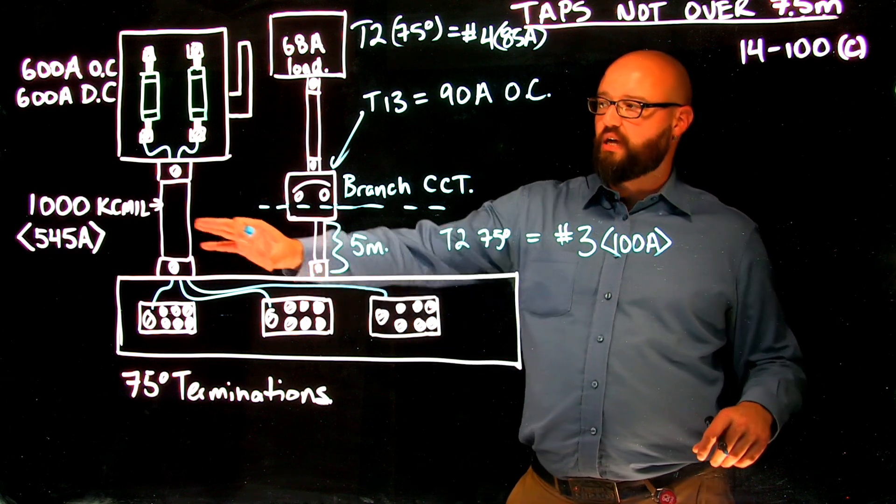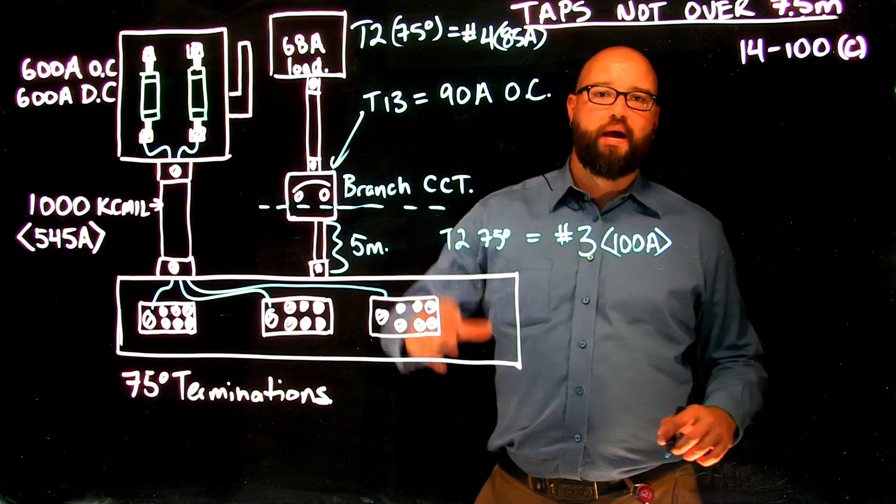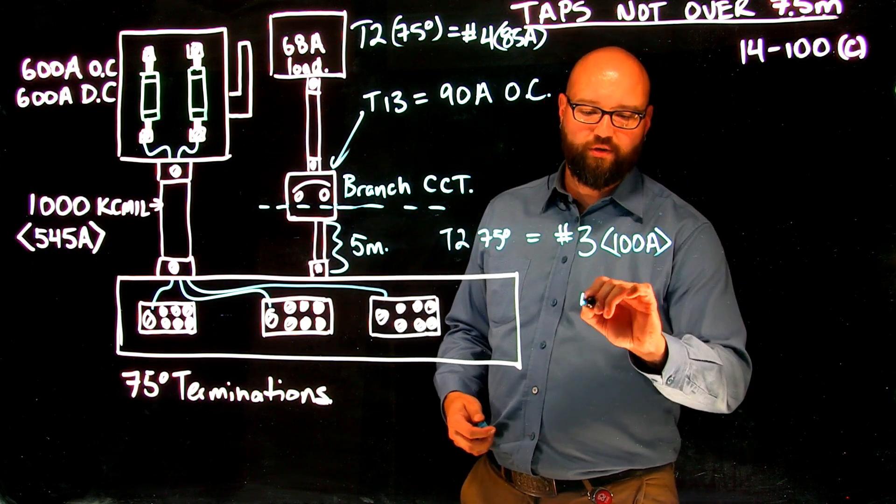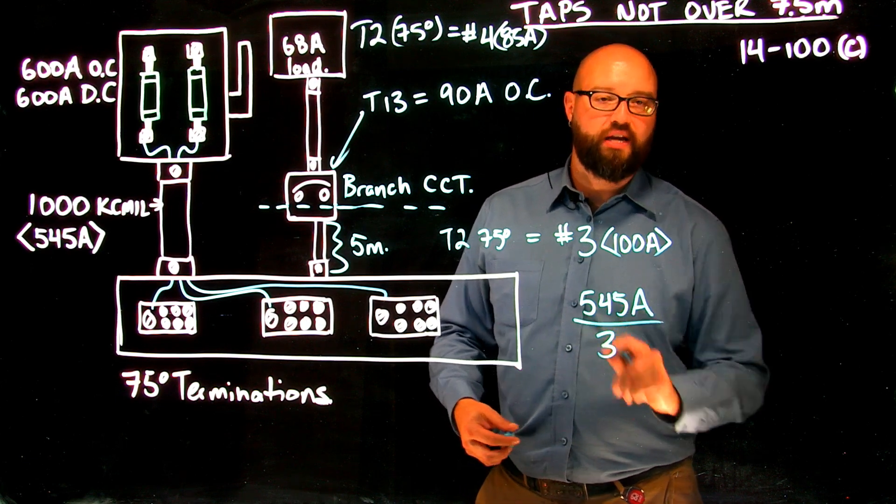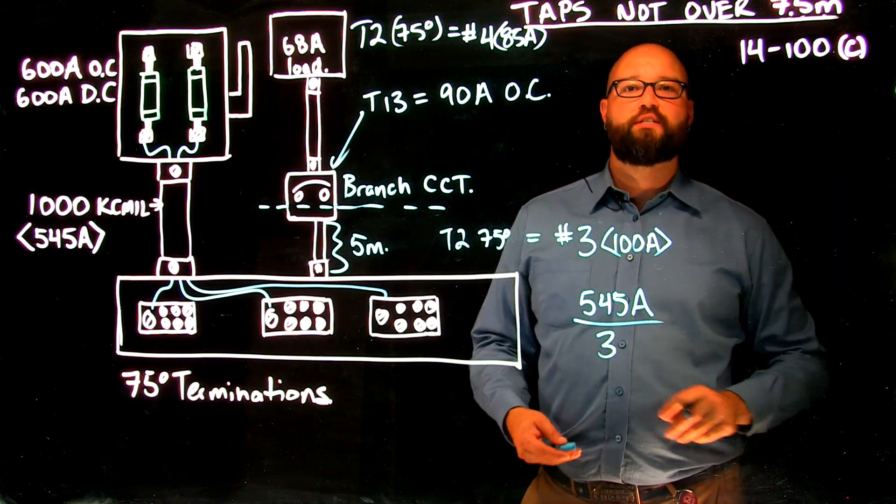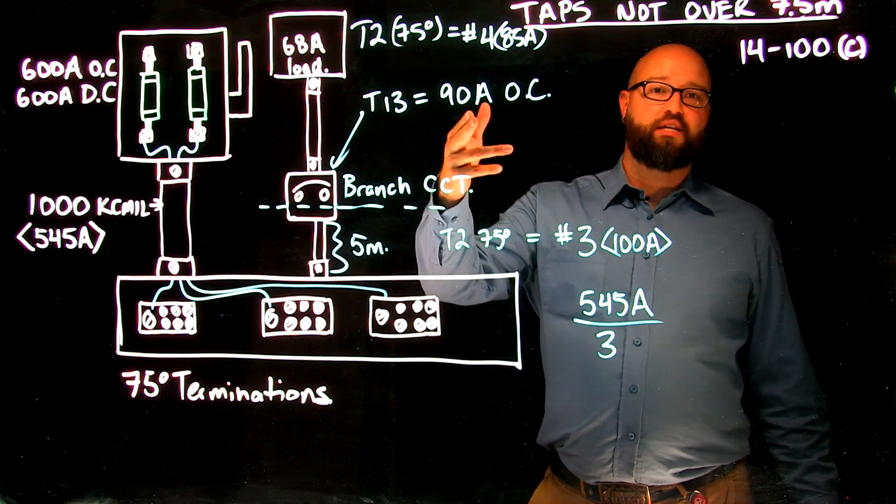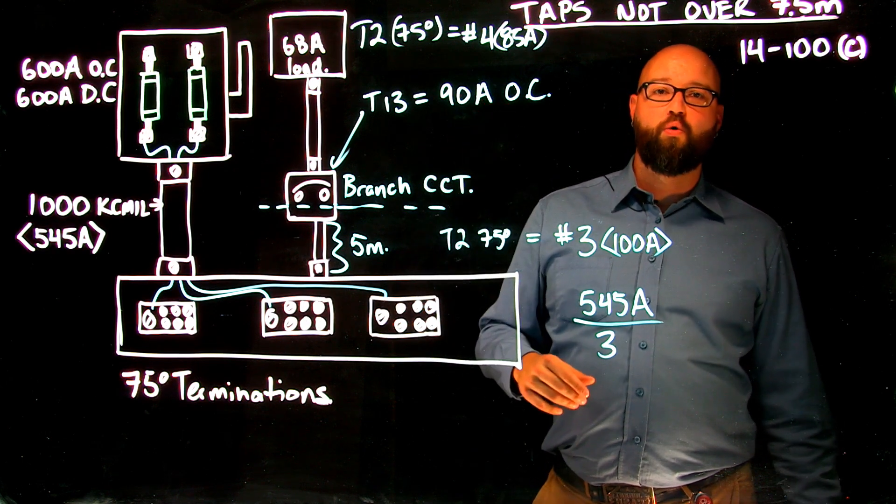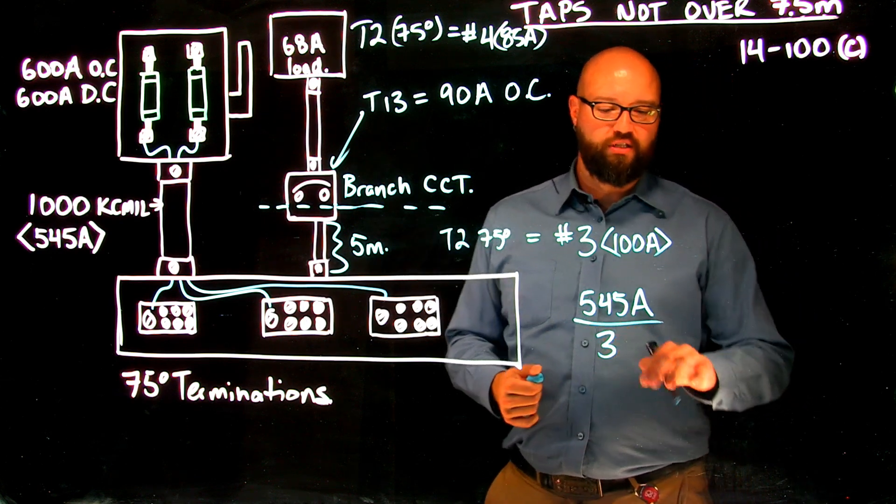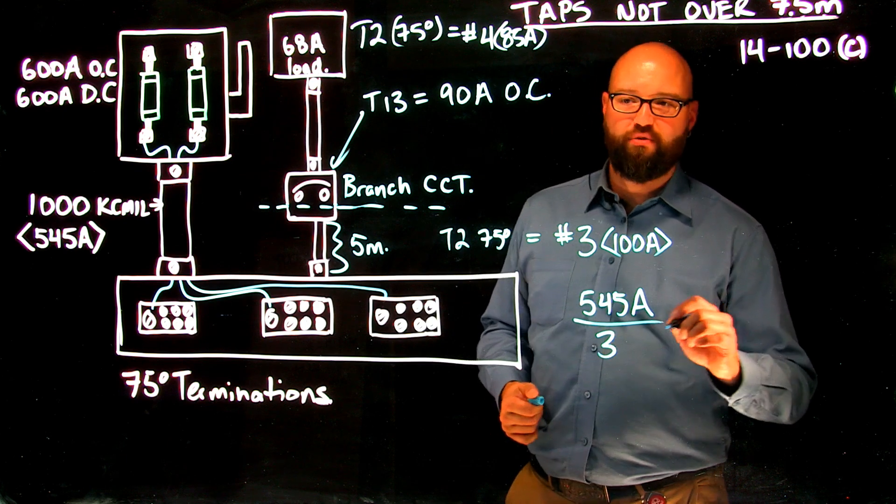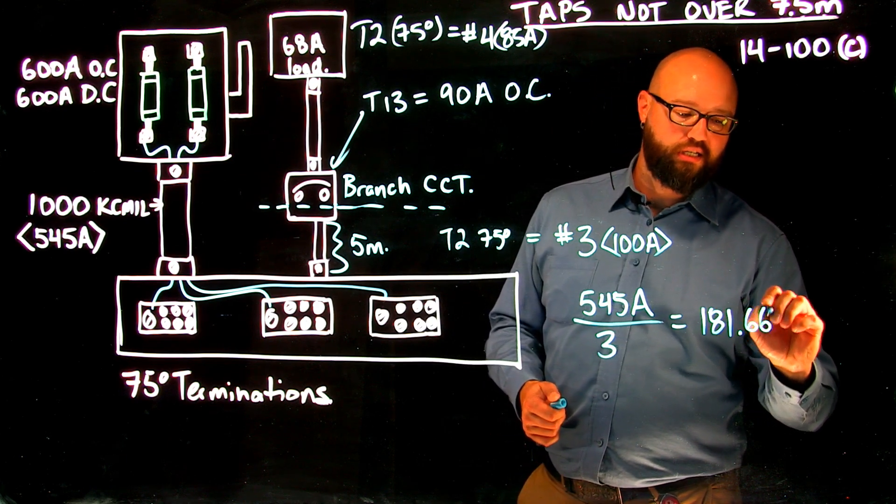The second is I'm going to go over to my feeder conductor, which is a thousand KC mil. I'm going to take the ampacity of that feeder conductor, which is 545 amps, and I'm going to divide it by 3 because it tells me 14100C. My tap is either slightly larger than the ampacity of my overcurrent or one-third the ampacity of my feeder conductor, which in this case 545 divided by 3 ends up at 181.667 amps.